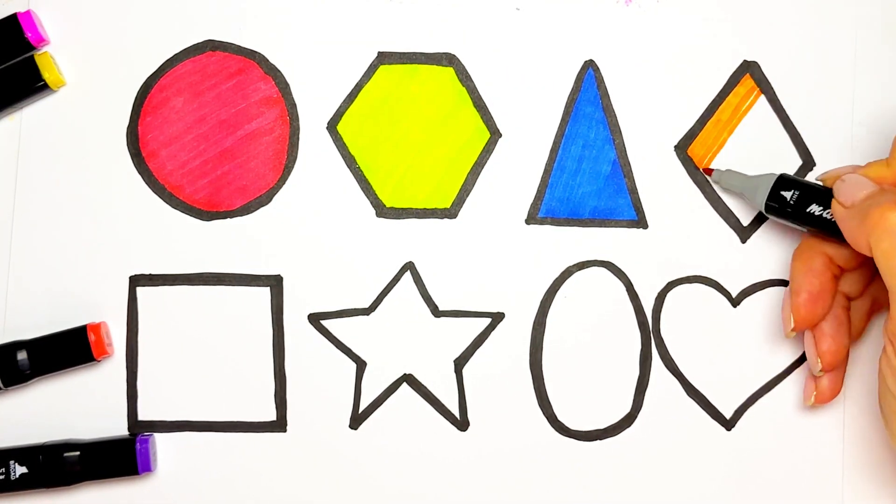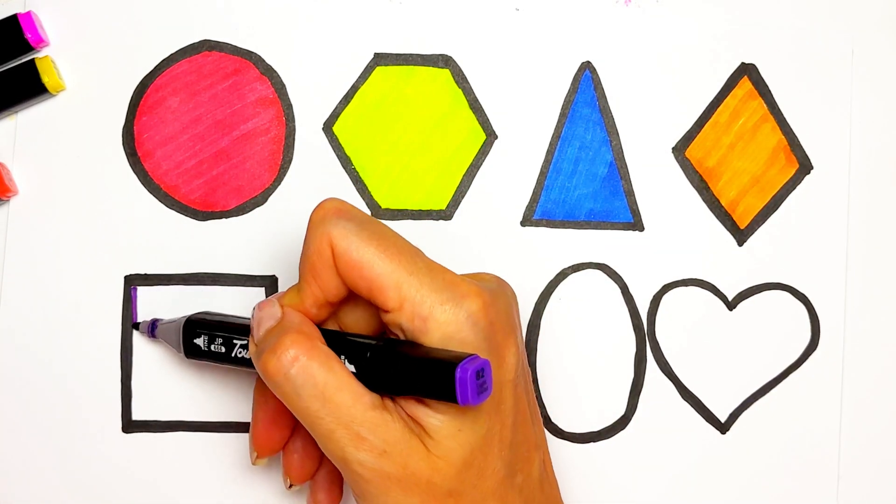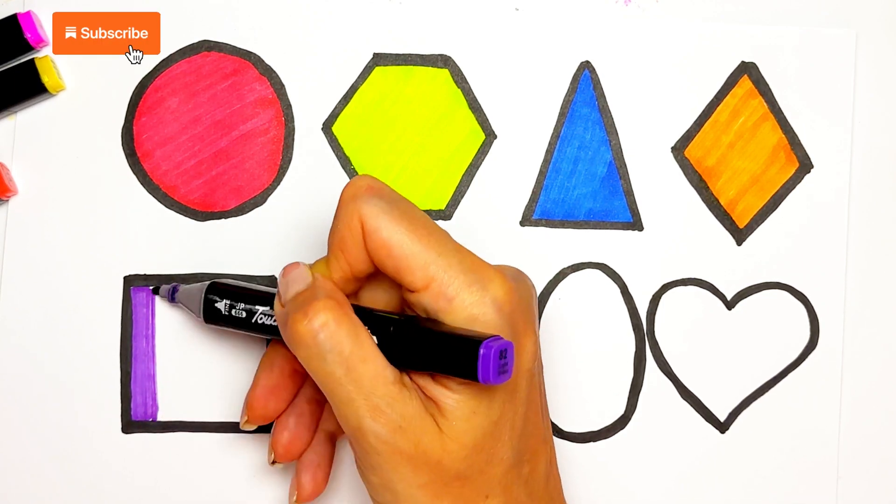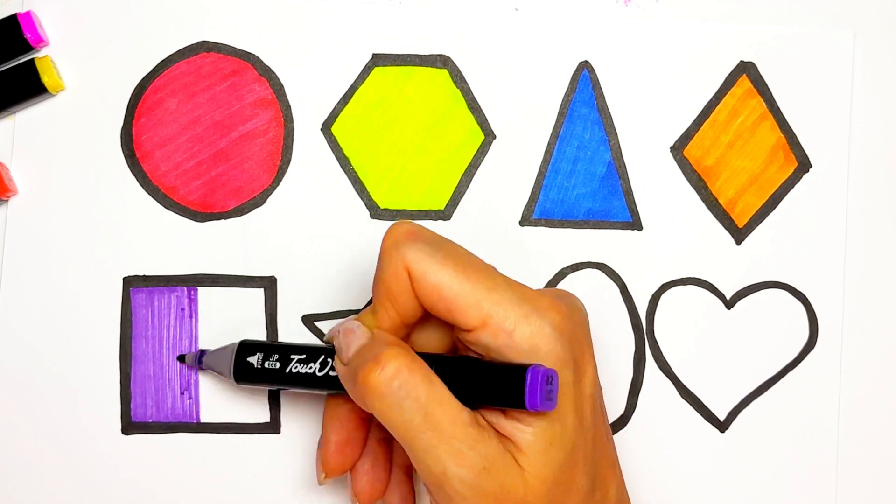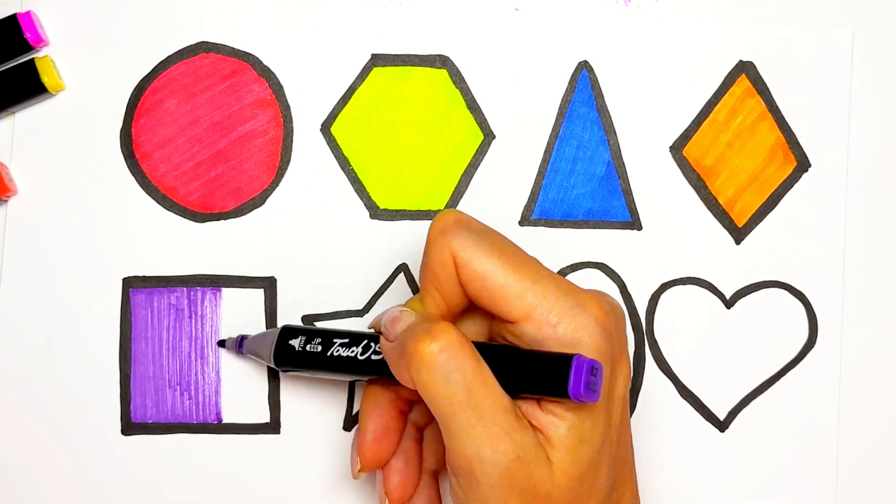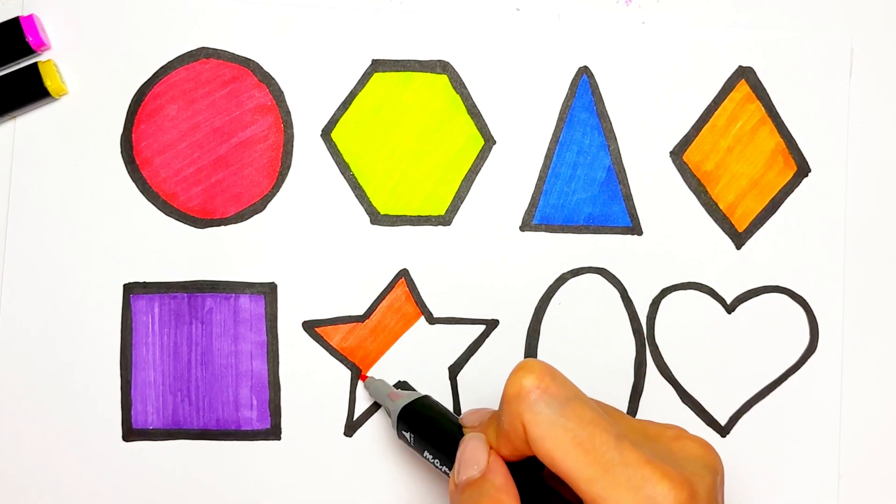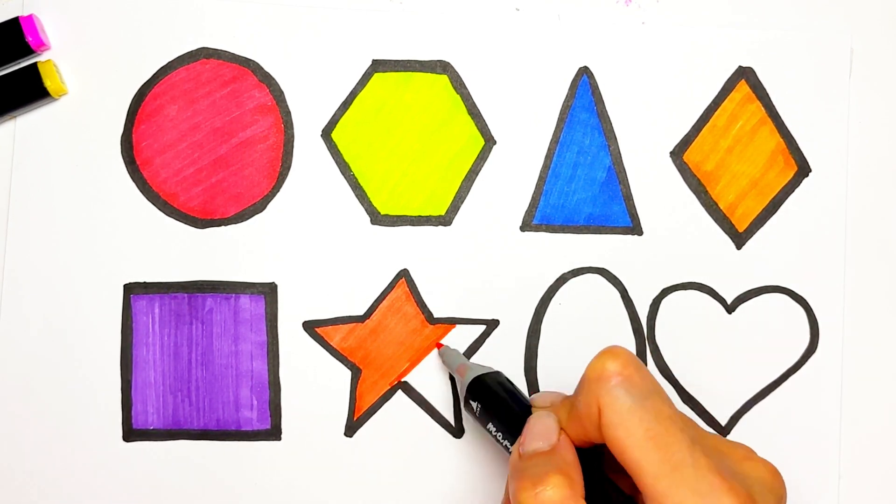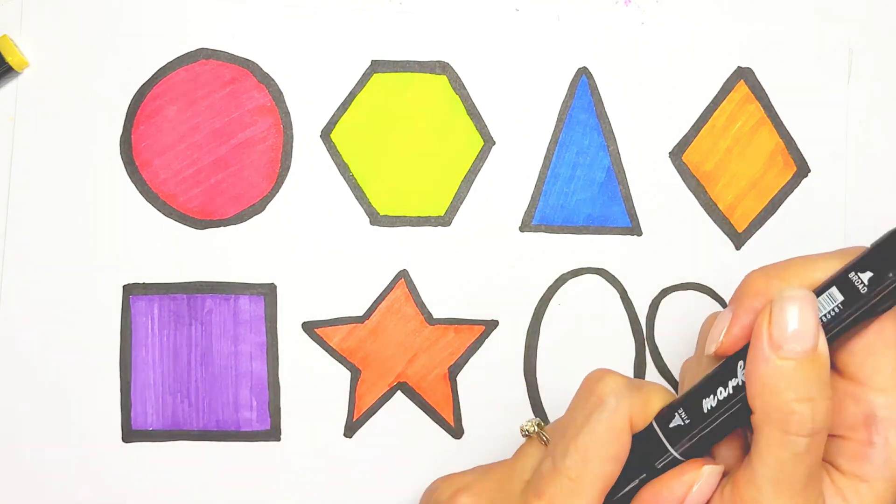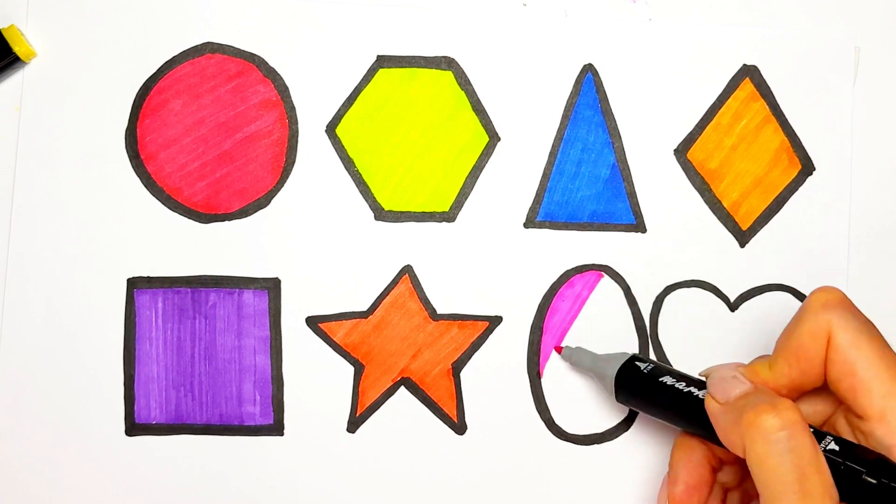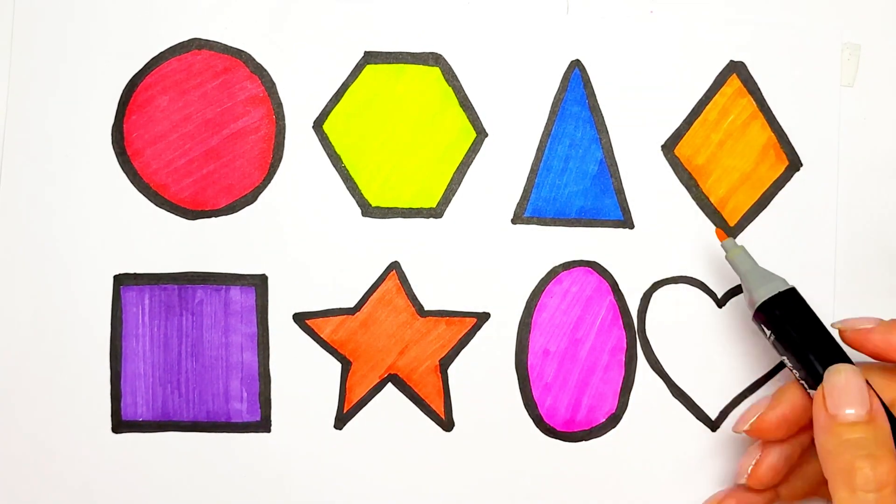Orange color for rhombus, purple color for square. Pink color for oval and yellow color for heart.